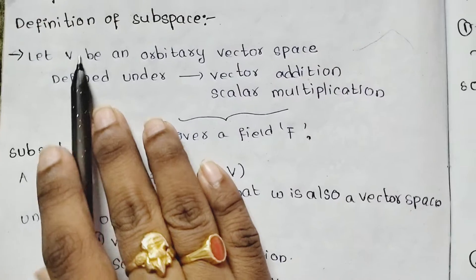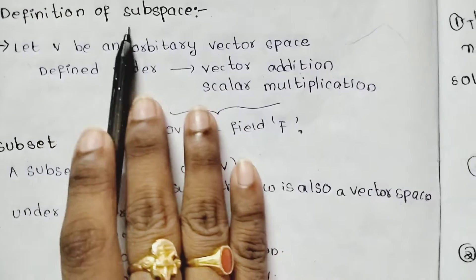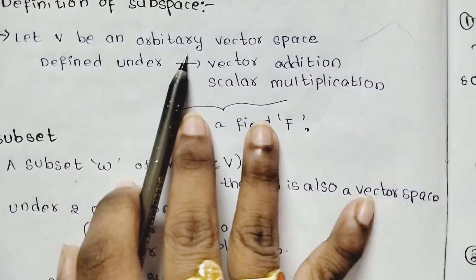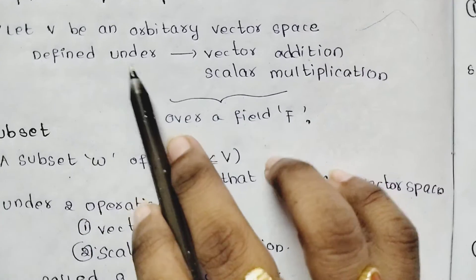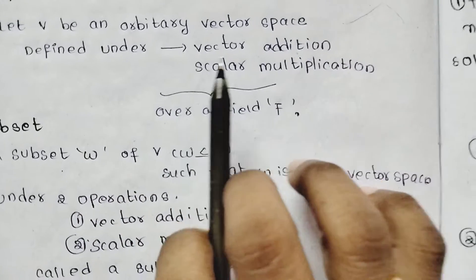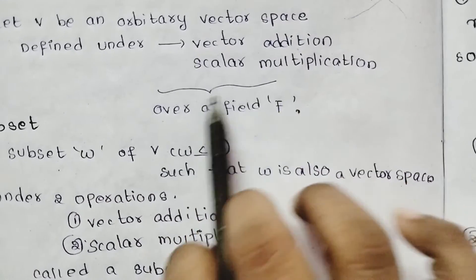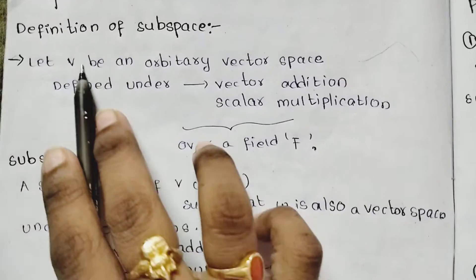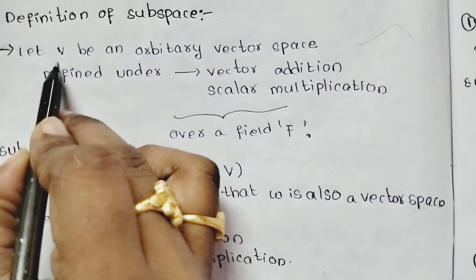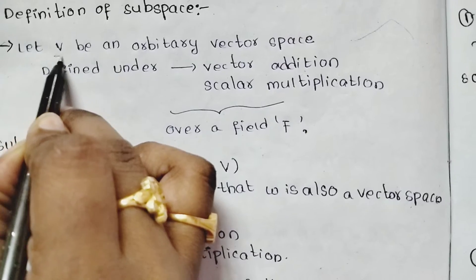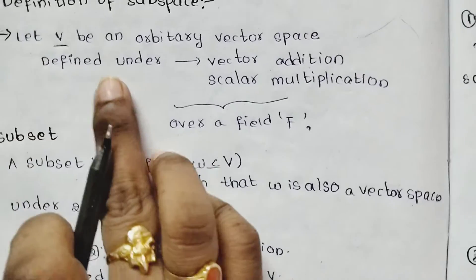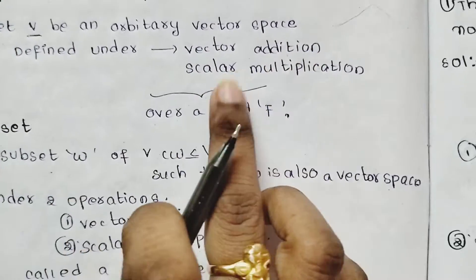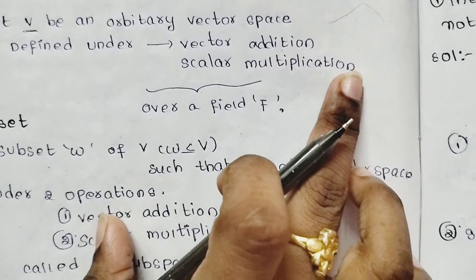First, the definition of subspace. Let V be an arbitrary vector space defined under vector addition and scalar multiplication over a field F. We will call it as V, and it should be defined under vector addition and scalar multiplication.